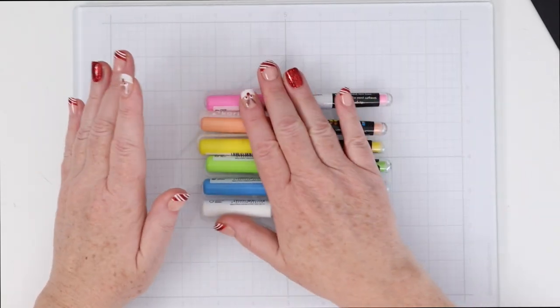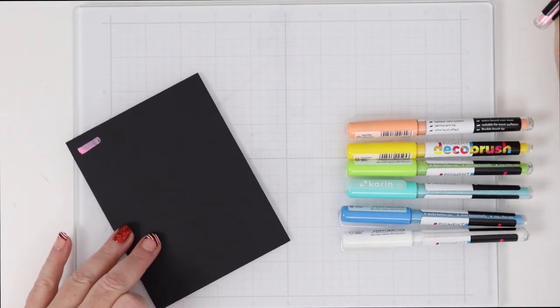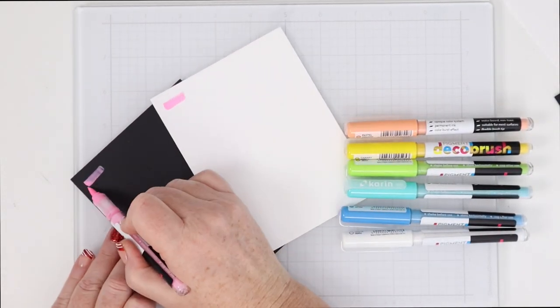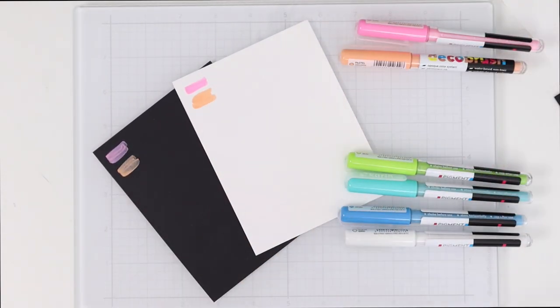So what you can do is buy a set of 12 for about 50 or you can go to Dick Blick and order them individually which is what I did with the pigment brushes that I'm showing you right now.